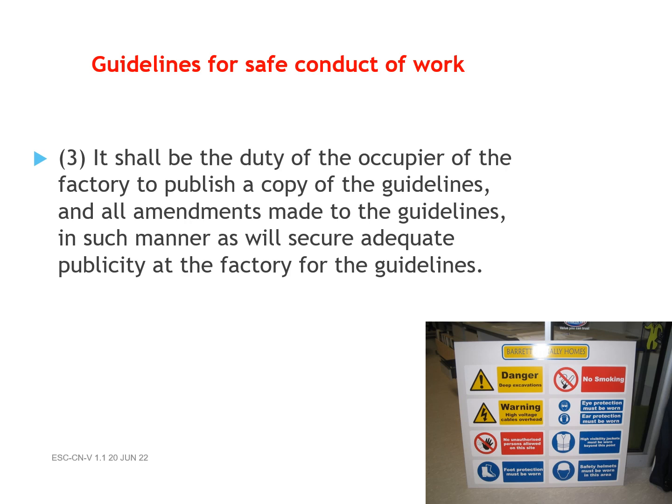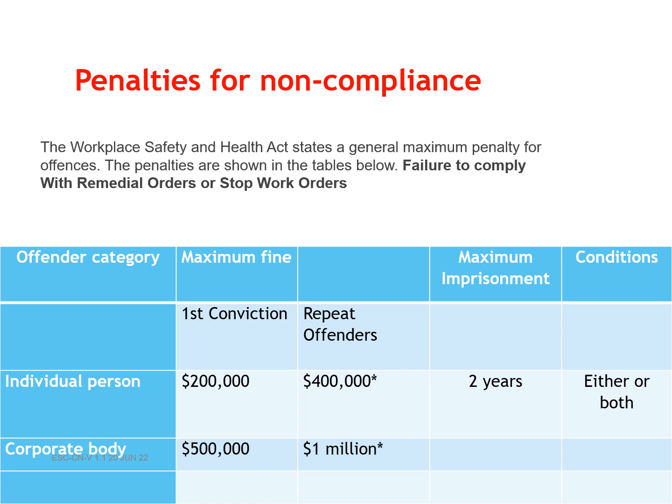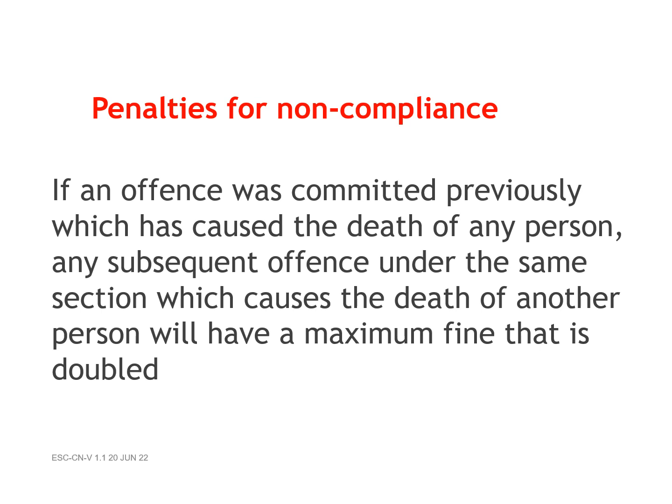Penalties for Non-Compliance. The Workplace Safety and Health Act states a general maximum penalty for offenses; the penalties are shown in the tables below. Failure to comply with remedial orders or stop work orders. If an offense was committed previously which caused the death of any person, any subsequent offense under the same section which causes the death of another person will have a maximum fine that is doubled.